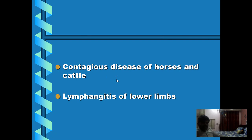Corynebacterium pseudotuberculosis is a different biotype that causes disease in horses and cattle as compared to the caseous lymphadenitis of sheep and goat. This is biotype 2 that causes disease in these species, and the disease is characterized by inflammation of the lymphatics.